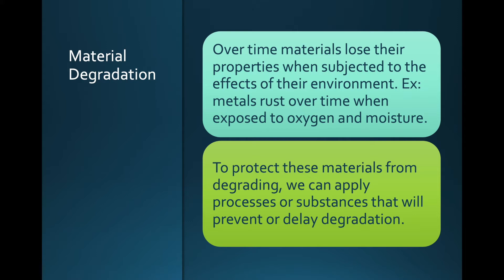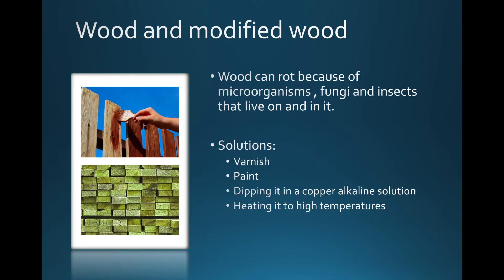To protect these materials from degrading, we're going to either apply processes or substances that will protect the materials and prevent or delay the degradation. The first material is wood. Wood can rot because there are microorganisms — bacteria, fungi, and so on — that live inside the wood and basically eat it up, transforming it and making it rot and less strong.